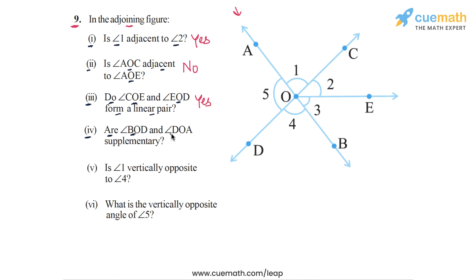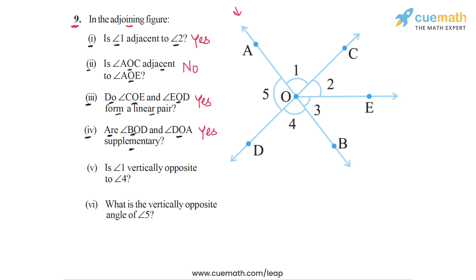In part four, the question is: are angle BOD and angle DOA supplementary? Supplementary means their sum should be 180 degrees. Angle BOD is this angle here and angle DOA is this angle here. These two angles complete the straight angle on line AOB, so they form a linear pair and their sum is 180 degrees. The answer for part four is yes, they are supplementary.